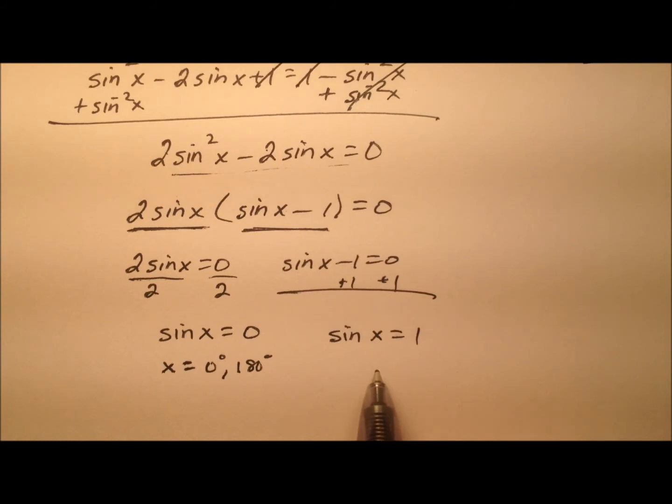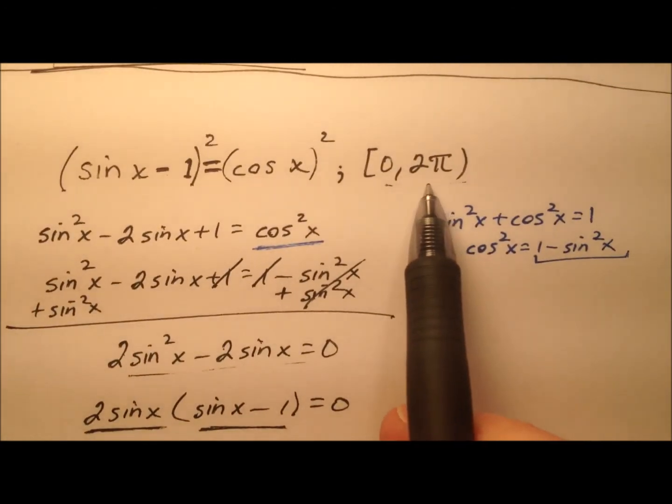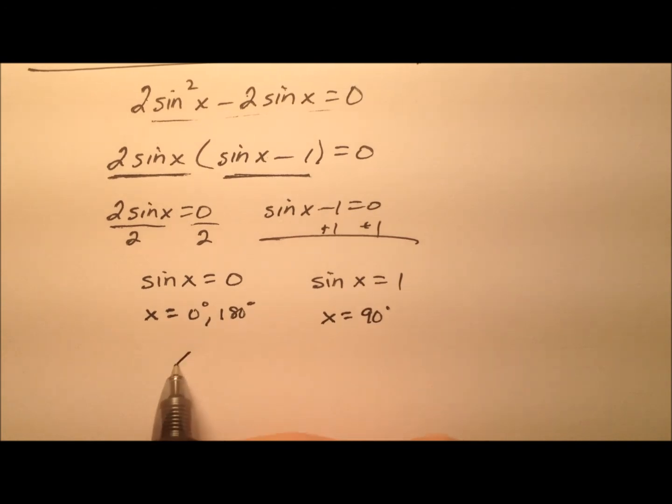How about where does sine of x equal positive 1? Well, that occurs at 90 degrees. We need our answers to be in radians, though, instead of degrees. So let's go ahead and put these in order. We'll say x equals 0, π over 2, and π.